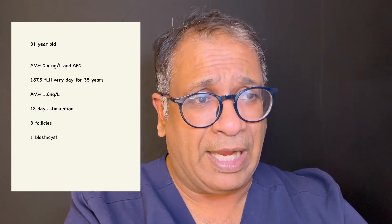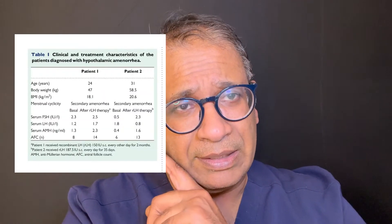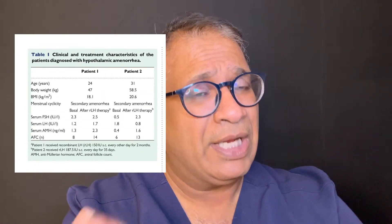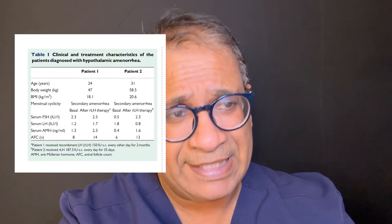In the second case, a lady had a very low AMH and AFC. Rather than starting stimulation immediately, they gave recombinant LH at 187 units every day for 35 days. The AMH rose to 1.6 nanograms, and after 12 days of stimulation, one blastocyst was formed from three follicles. Looking at both cases, by giving LH they observed a change in follicle numbers and AMH — a good indication that folliculogenesis is occurring.